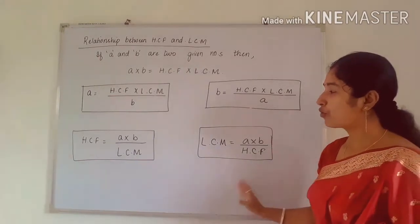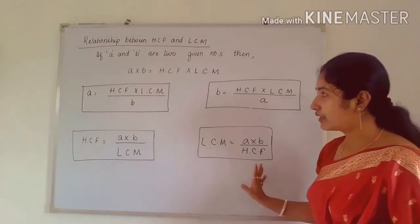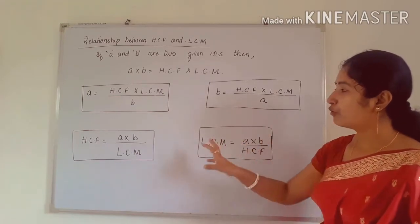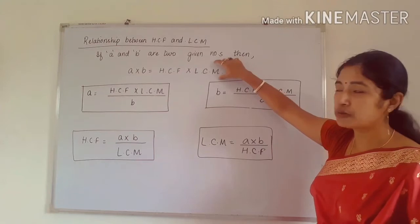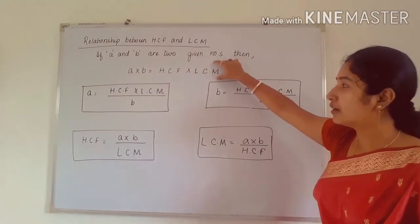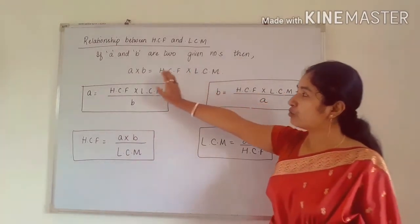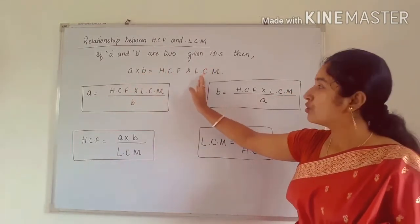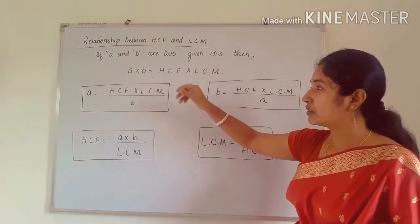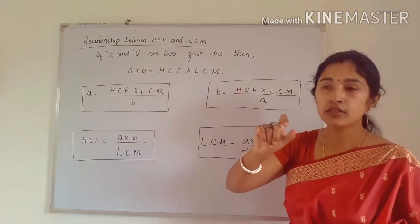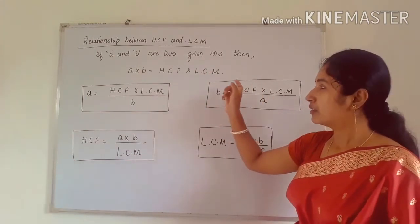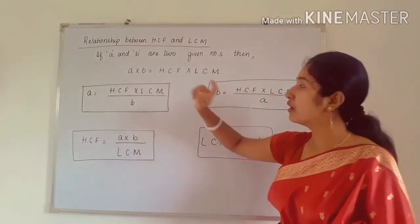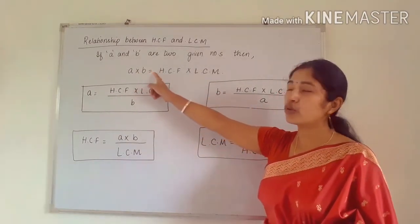Remember this formula — it is very simple. We can find all four formulas from the single expression A × B = HCF × LCM. There are two parts: left-hand side and right-hand side. This expression is called an equation because it has an equal-to symbol.